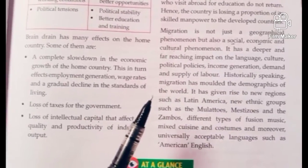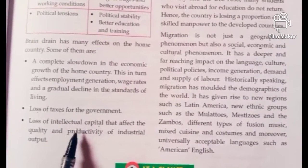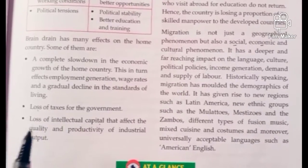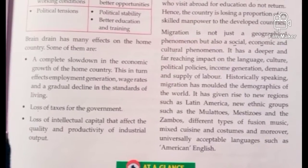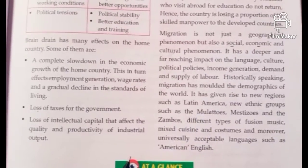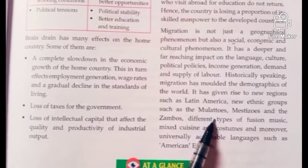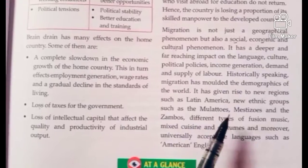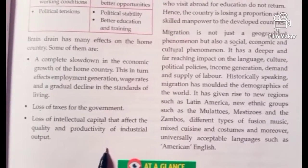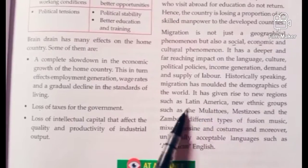Historically, migration has molded the demographics — the populations — of the world. For example, there is a huge influx of Indian workers in UAE, Dubai, and Qatar, where labor scarcity has been easily reduced and those countries are developing very fast. Migration also gives rise to new ethnic groups in new regions, like in Latin America — mulattos, mestizos, and zambos — who are mixed-race people from Spanish, African, and American ancestry. When people from two different countries marry, they form a different race.